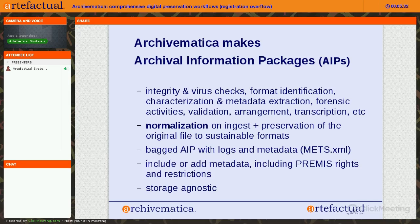In the course of using Archivematica and creating AIPs, what we call microservices perform many functions. Archivematica does integrity and virus checking, format identification, characterization and metadata extraction, some forensic activities in our digital forensic workflow, and validation. You can do some arrangement in Archivematica, and we also offer transcription now. Archivematica also allows normalization on ingest — we migrate to preservation and/or access comment formats if you choose. Even if you do migration to a preservation format, you will always have the original to go back to. AIPs are bagged using the BagIt specification and include all logs and metadata from processing, packaged in METS XML.